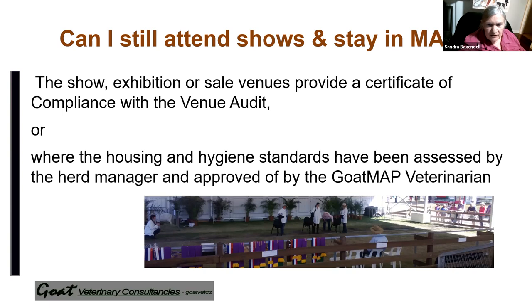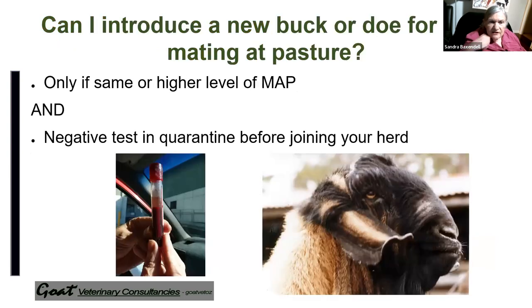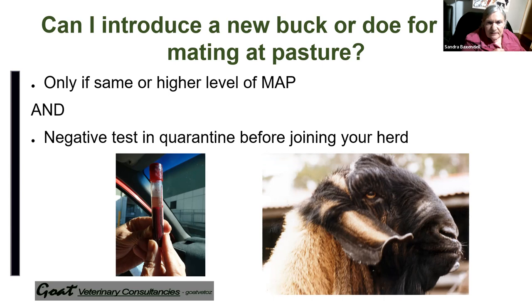Just a few basic biosecurity principles and I will approve attendance at shows. Can I introduce a new buck or doe for herd mating at pasture? In the new scheme, only if it's at the same or higher level of CAE MAP and it's tested negative while in quarantine before joining the herd. You can do it, but you must quarantine them and during that quarantine period get your vet to take a blood sample and submit it for testing for CAE. That's different from the current New South Wales and Queensland CAE accreditation, which did allow free movement between CAE-accredited herds — so it's an extra level of protection.